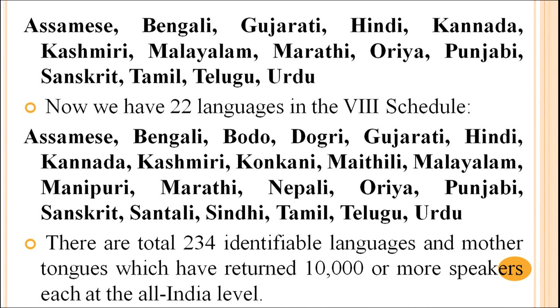The 22 scheduled languages as of now are: Assamese, Bengali, Bodo, Dogri, Gujarati, Hindi, Kannada, Kashmiri, Konkani, Maithali, Malayalam, Manipuri, Marathi, Nepali, Odia, Punjabi, Sanskrit, Santali, Sindhi, Tamil, Telugu, and Urdu.